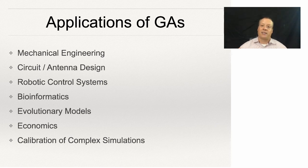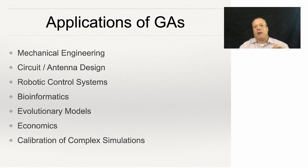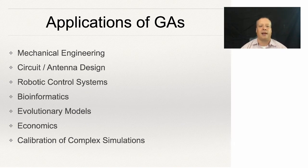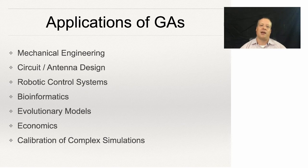They've been used to control robots. One cool example is a friend of mine showed that you could use evolutionary computation to make robots more adaptable — where if you damaged one of their legs, they could adapt to that and still be able to walk. In bioinformatics, hearing aids have used genetic algorithms to tune the properties of the hearing aids so they better work for the people actually wearing them, rather than having them preset for all individuals.